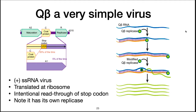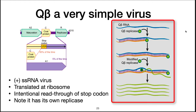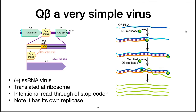Since Qbeta is an RNA virus, it must encode its own replicase. As the replicase is made, it begins copying the viral RNA, first into a negative strand and then into a positive strand. When enough maturation protein accumulates, it will lyse the cell.